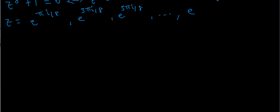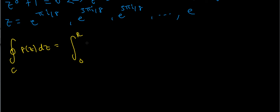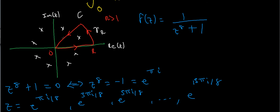I'll assume R is greater than 1. The contour integral over C of f(z) dz equals the integral from 0 to R of f(x) dx, plus the integral over the arc gamma sub R of f(z) dz, plus the contribution from this last line — which is just this same integral from 0 to R rotated through some angle.